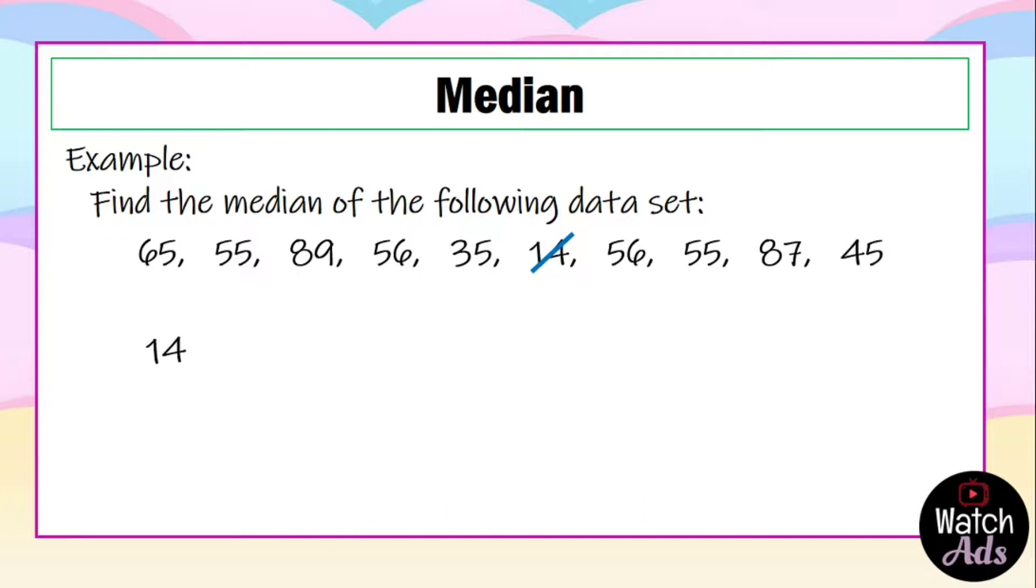First 14, second 35, third 45, fourth is 55 and fifth is also 55 so we write them down. Sixth is 56 and seventh is also 56, write them down. Next is 65, that's eighth number. 87 is the ninth number. 89 is the tenth number. Now we know that we have 10 numbers in the data set, and 10 is an even number.